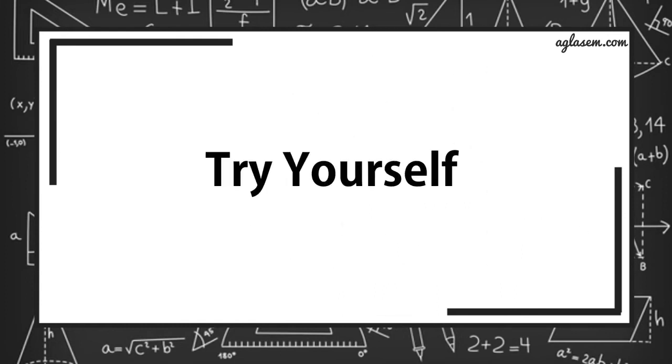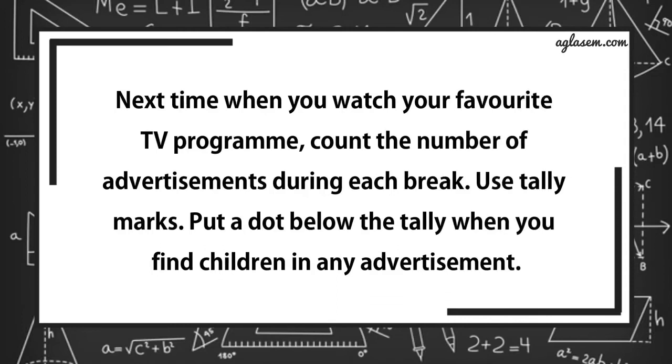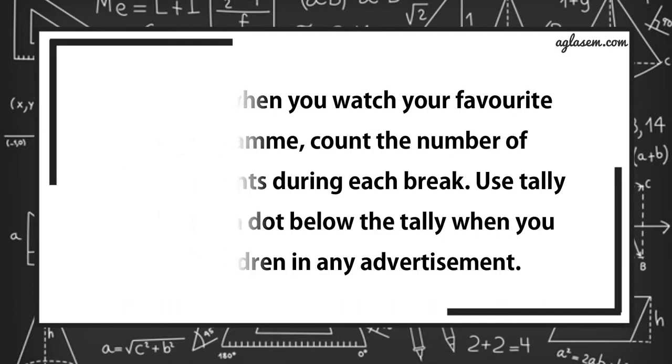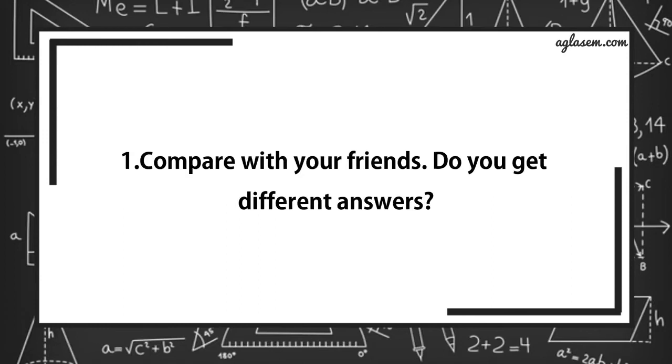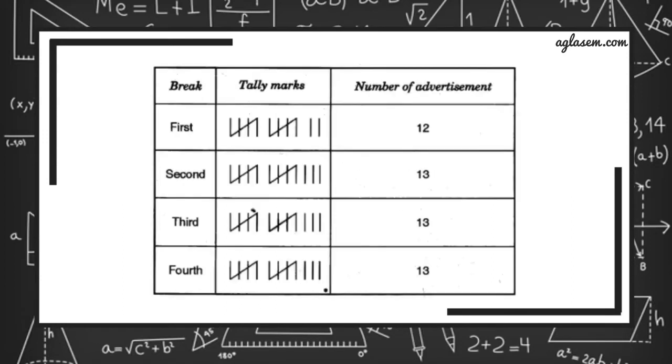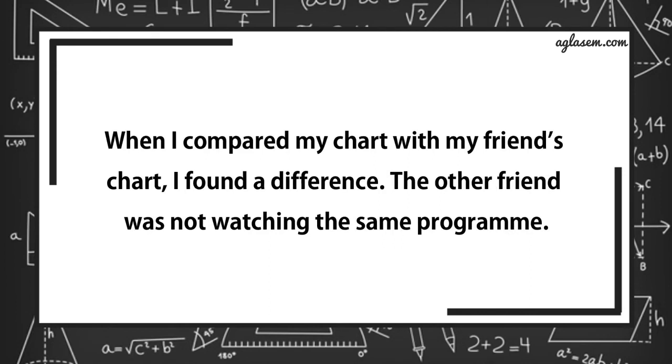Further, use tally marks to count the number of ads during the short breaks in programs. Were there ads during the news program? Answer is, tally marks used to count the number of ads can be as follows, assuming that 14 ads in a break. Yes, during news programs also, there are ads. Try yourself. Next time, when you watch your favorite TV program, count the number of advertisements during each break. Compare with your friend, do you get different answers? Here is a picture. There are 12 advertisements in first break, 13 in second, 13 in third, 13 in fourth. When I compare my chart with my friend's chart, I found a difference. The other friend was not watching the same program.